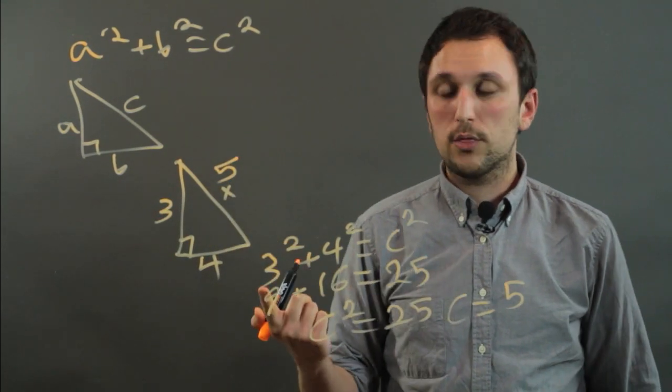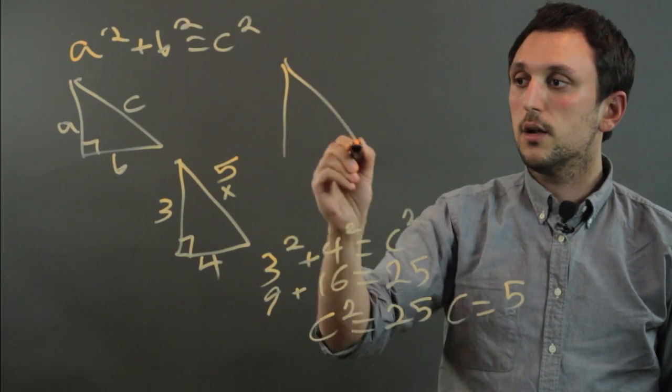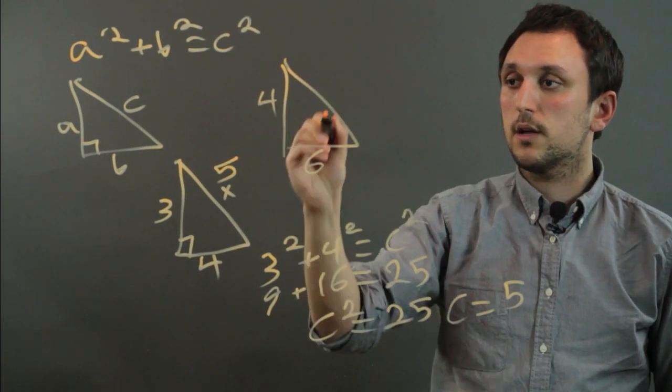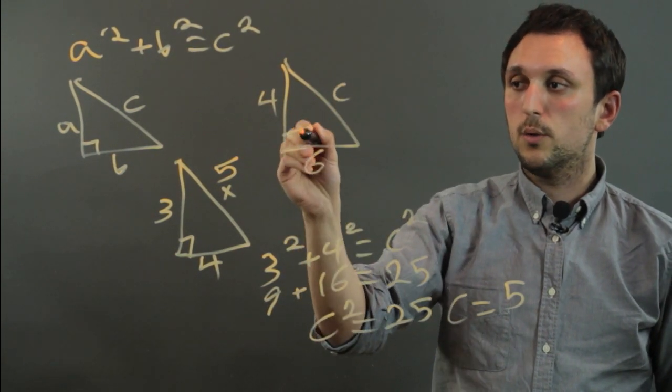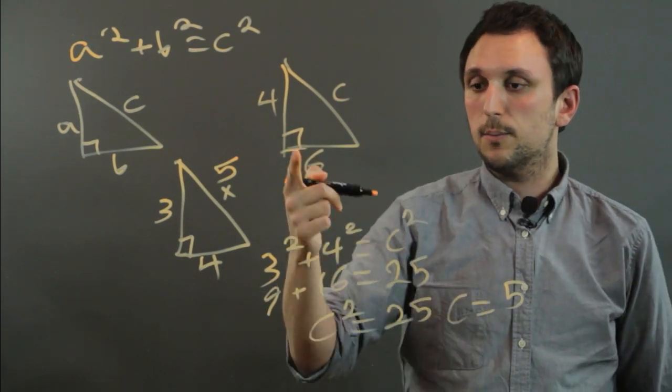You can also do it with radicals. So we can say, here is 4, 6, and C, where this is a 90 degree angle. So you would again do the Pythagorean theorem.